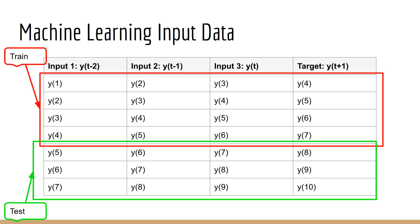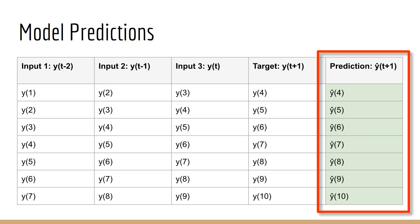Another thing we typically do in machine learning is split our dataset into train and test. This is because we want to simulate how our model will perform on data it has never seen before — a proxy for how it performs in the real world on future data. It's important that the train set consists of values that come before the test set. For example, you might train your LSTM on stock prices from 2010 to 2020 and then test it on prices in 2021. We can make predictions for both the train and test sets.